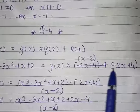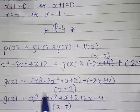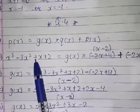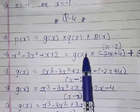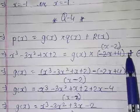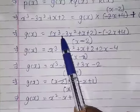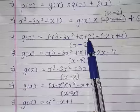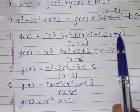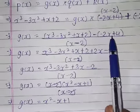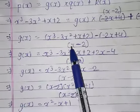So if you want to find g(x), this remainder will be subtracted from p(x) and divided by x minus 2 will give you g(x), because this is a plus sign. So g(x) is equal to x cube minus 3x square plus x plus 2 minus (minus 2x plus 4), divided by x minus 2.